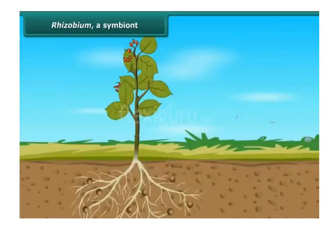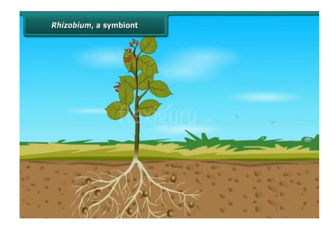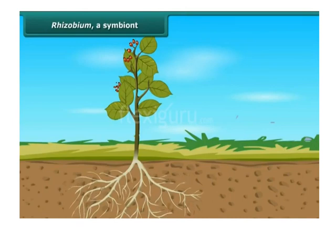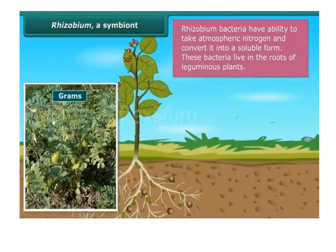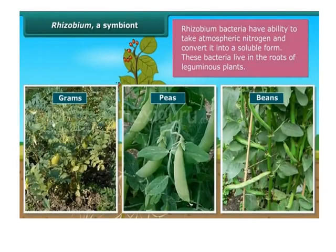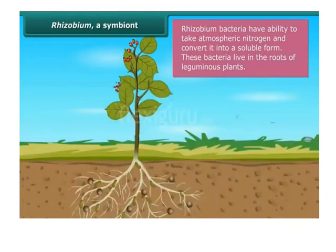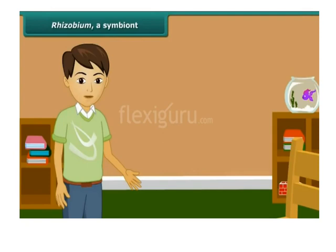Plants also require a lot of nitrogen to make proteins, so they absorb nitrogen continuously from the soil, causing the amount of nitrogen to become deficient. As we know, 78% of nitrogen is present in our atmosphere, but plants cannot use it directly the way they use carbon dioxide — they require nitrogen in soluble form. The bacterium called rhizobium can take atmospheric nitrogen and convert it into a soluble form. These bacteria live in the roots of groundnuts, beans, moonbeams, and other legumes and provide them with nitrogen. In return, the plants provide food and shelter to the bacteria. Thus, rhizobium shows a symbiotic relationship.